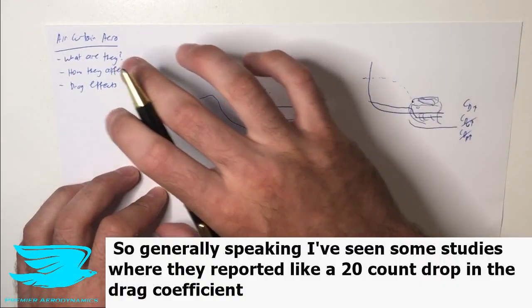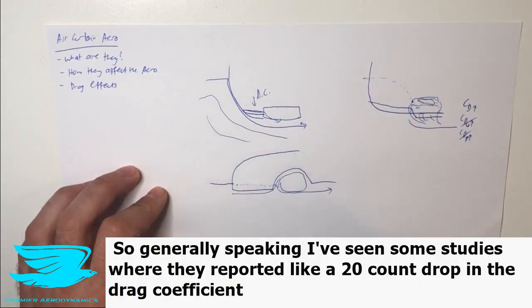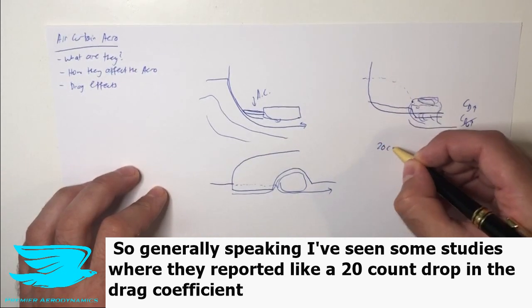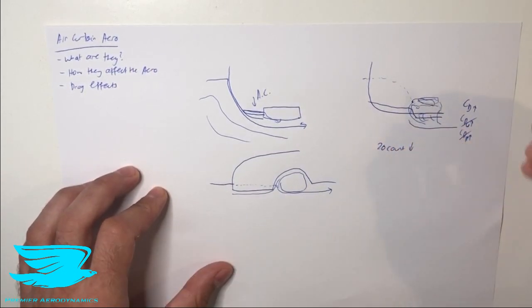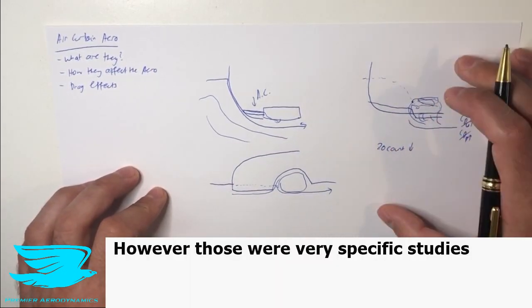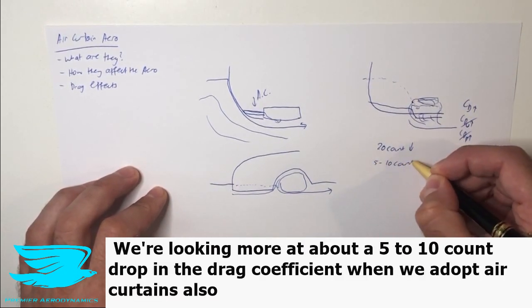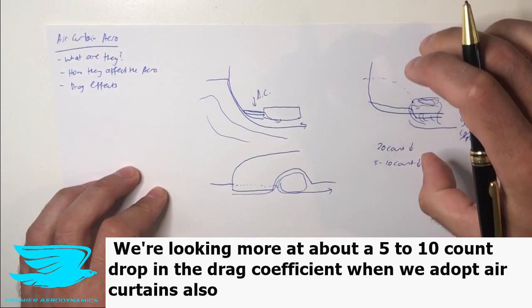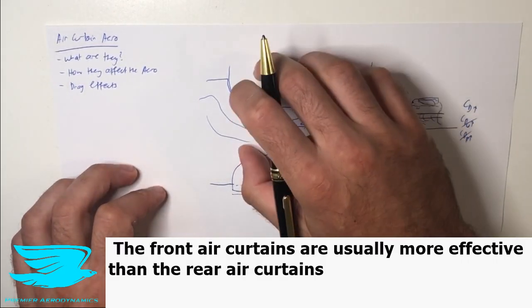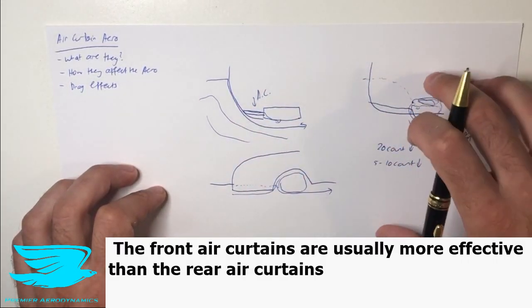Generally speaking, I've seen some studies where they've reported like a 20 count drop in the drag coefficient. However, those were very specific studies. In general, we're looking more at about a 5 to 10 count drop in the drag coefficient when we adopt air curtains. Also, the front air curtains are usually more effective than the rear air curtains.